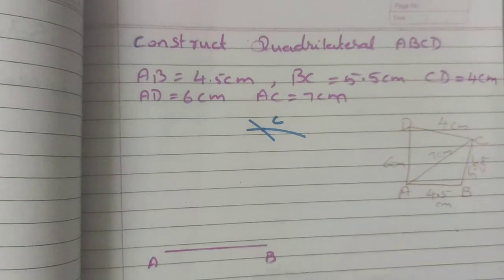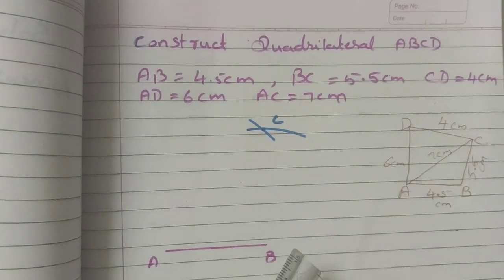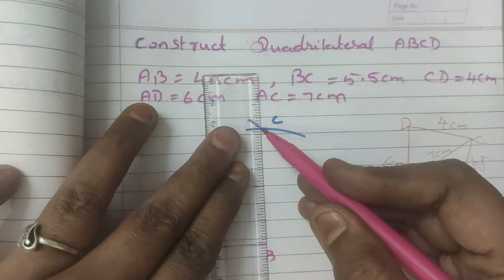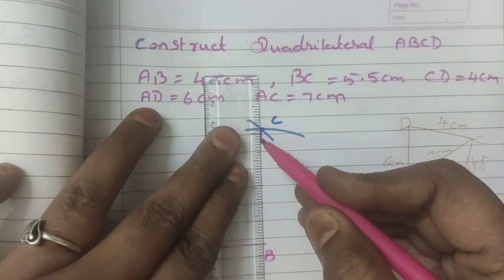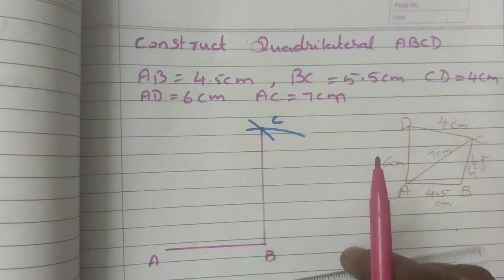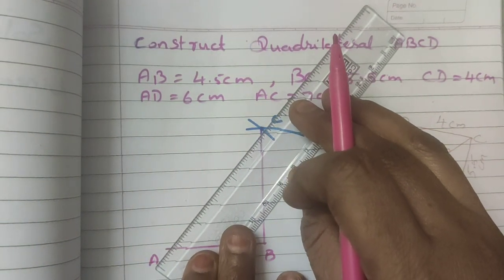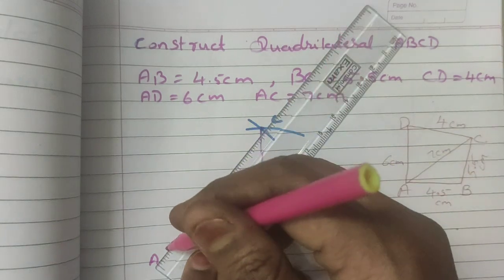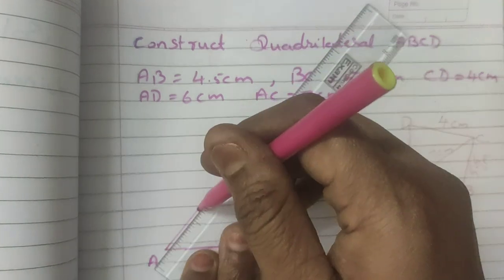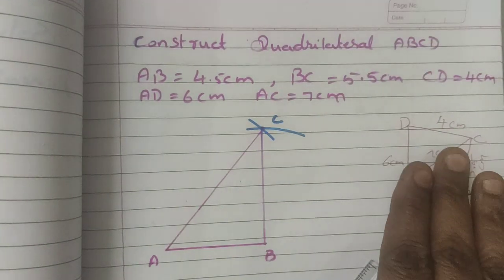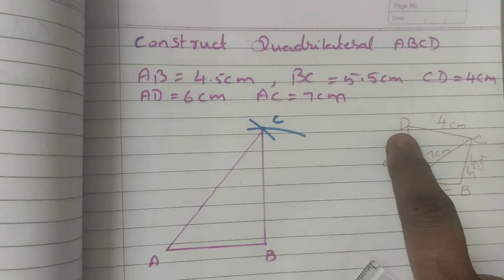Mark C. Now, join BC and AC. So half of the construction over. Next, I should construct D.